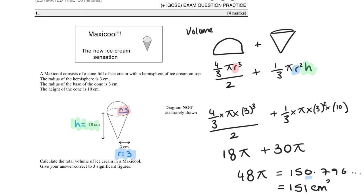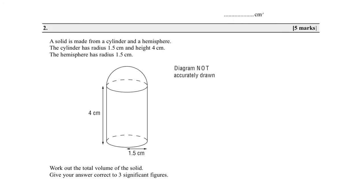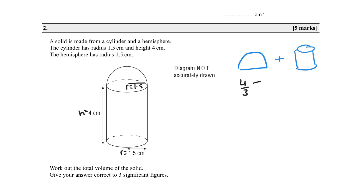Question two: a solid is made from a cylinder and a hemisphere. The cylinder has radius 1.5 and height 4, and the hemisphere has radius 1.5. Work out the total volume. We write down everything we know: hemisphere volume = (4/3 π r³) / 2, cylinder volume = π r² h. We're going to add them together.